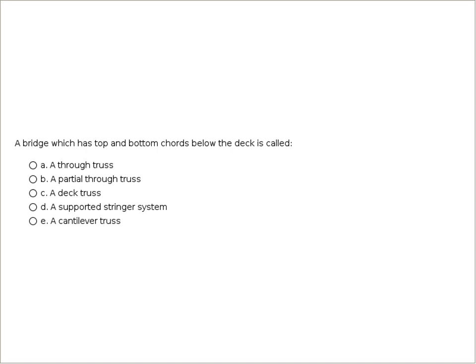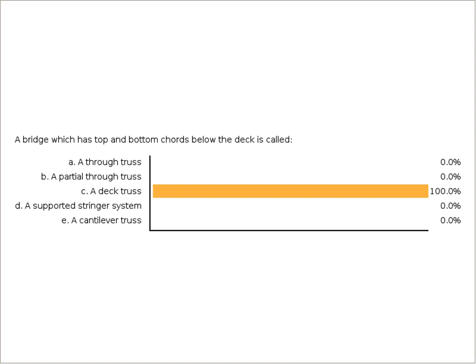Quiz question: a bridge which has top and bottom cords below the deck is called A, a through truss; B, a partial through truss; C, a deck truss; D, a supported stringer system; or E, a cantilever truss? The correct answer is C, a deck truss.